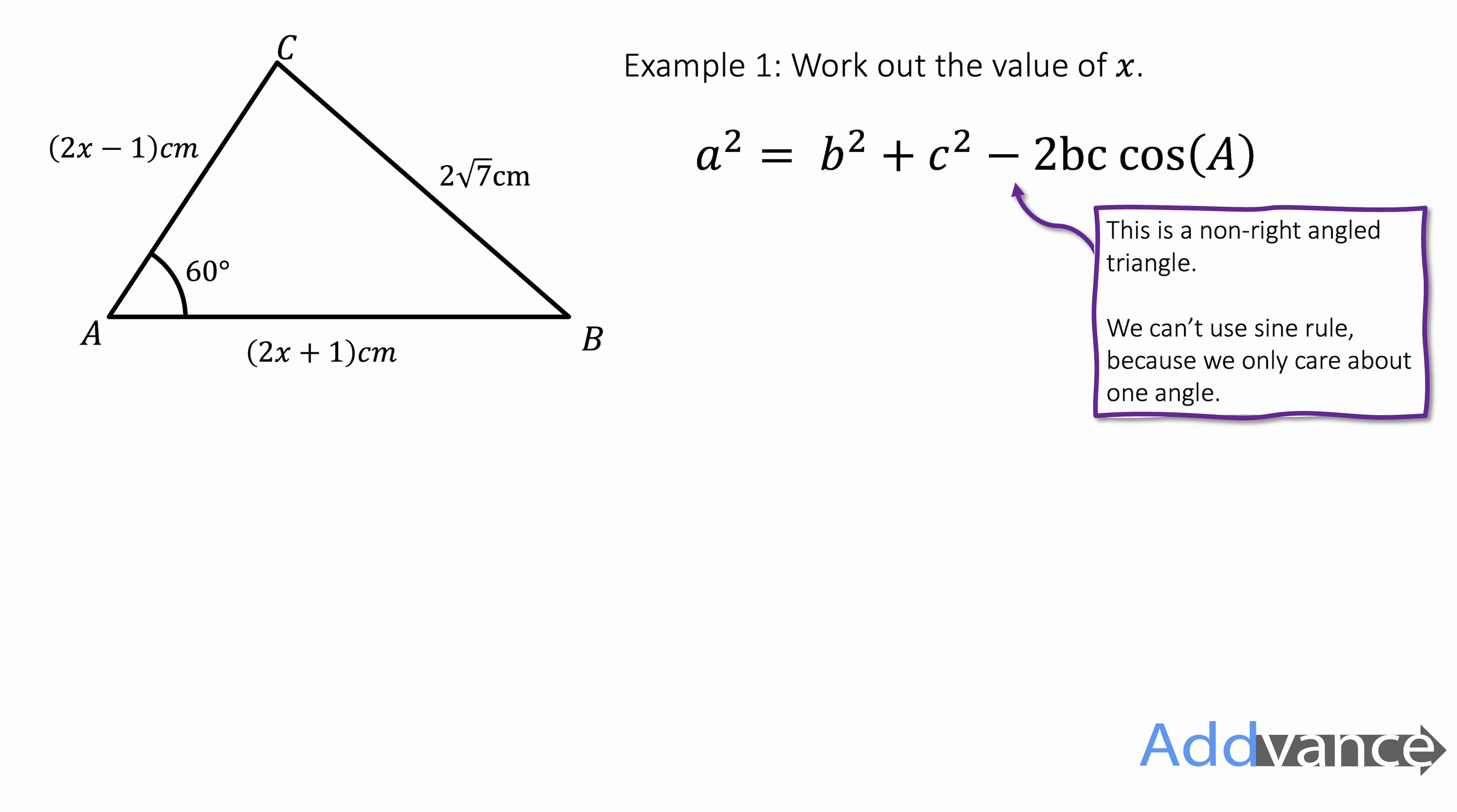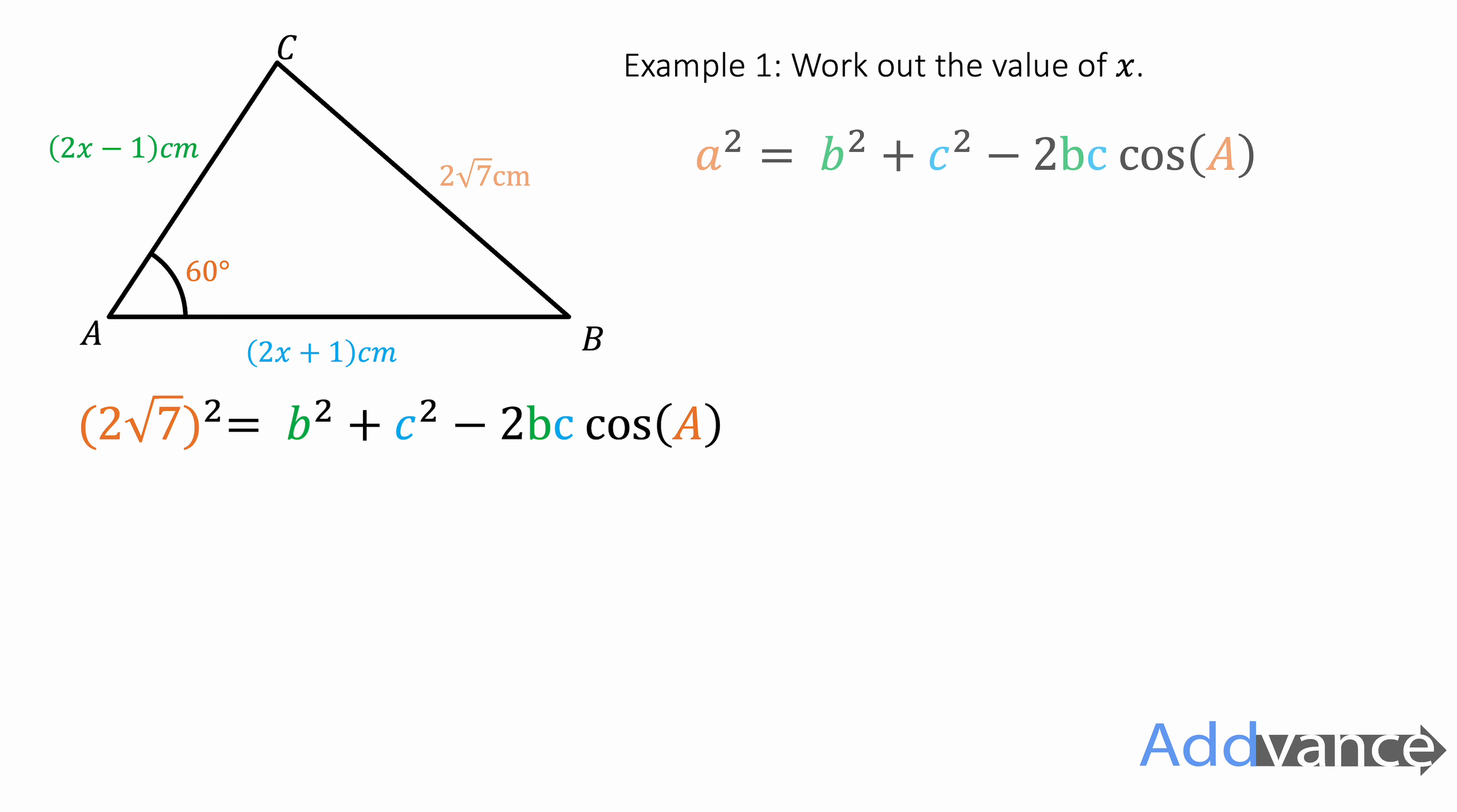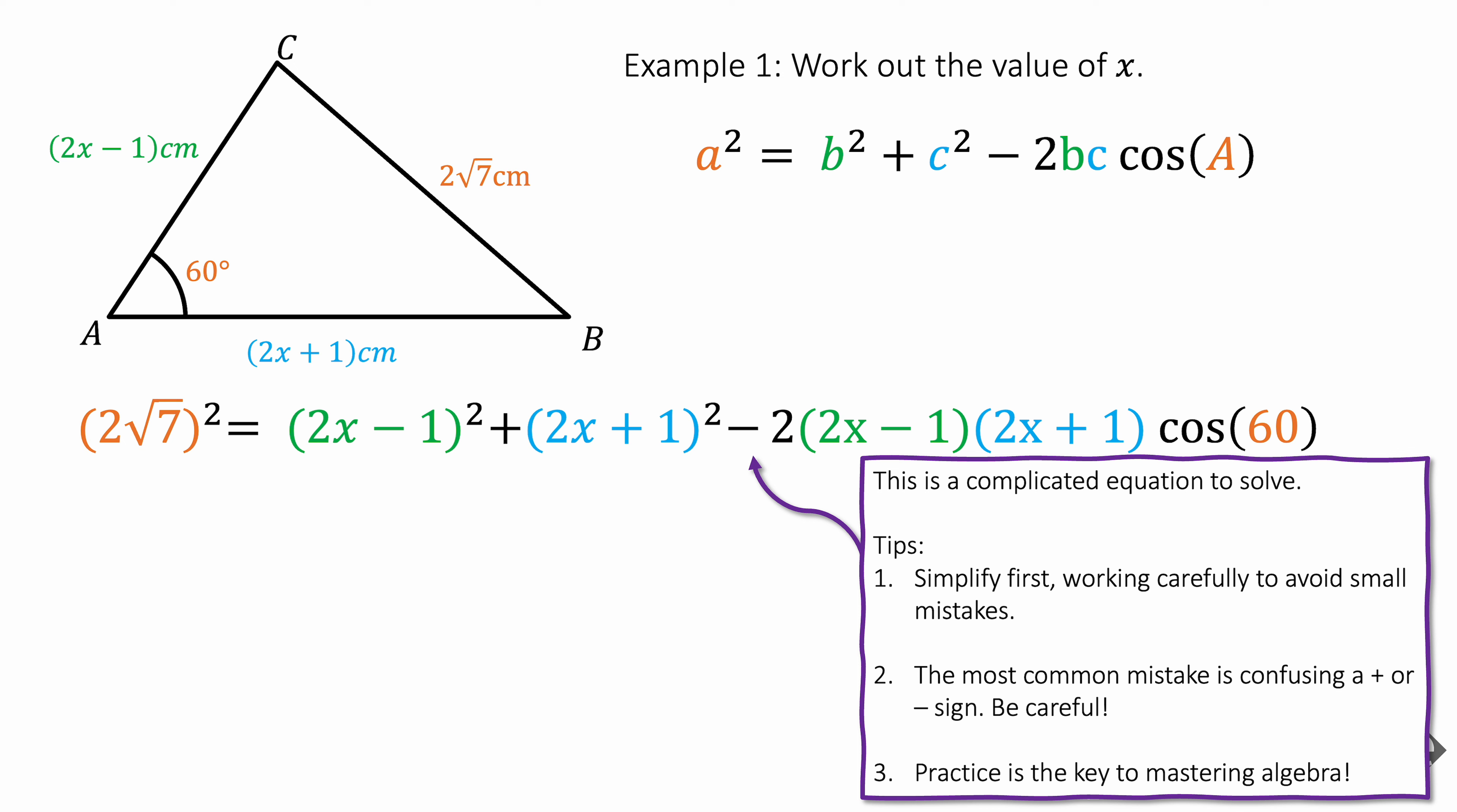So my answer. Well, I'm going to use the cosine rule because it is a non-right angle triangle and we cannot use the sine rule because we're only interested in one angle. Sine rule you would need to be interested in two angles. And so we're going to start substituting A, B and C into this. And we get this expression here and this is complicated. This is a complicated equation. And so my tips for this will be simplify first, working carefully to avoid small mistakes. A small mistake would completely ruin your answer.